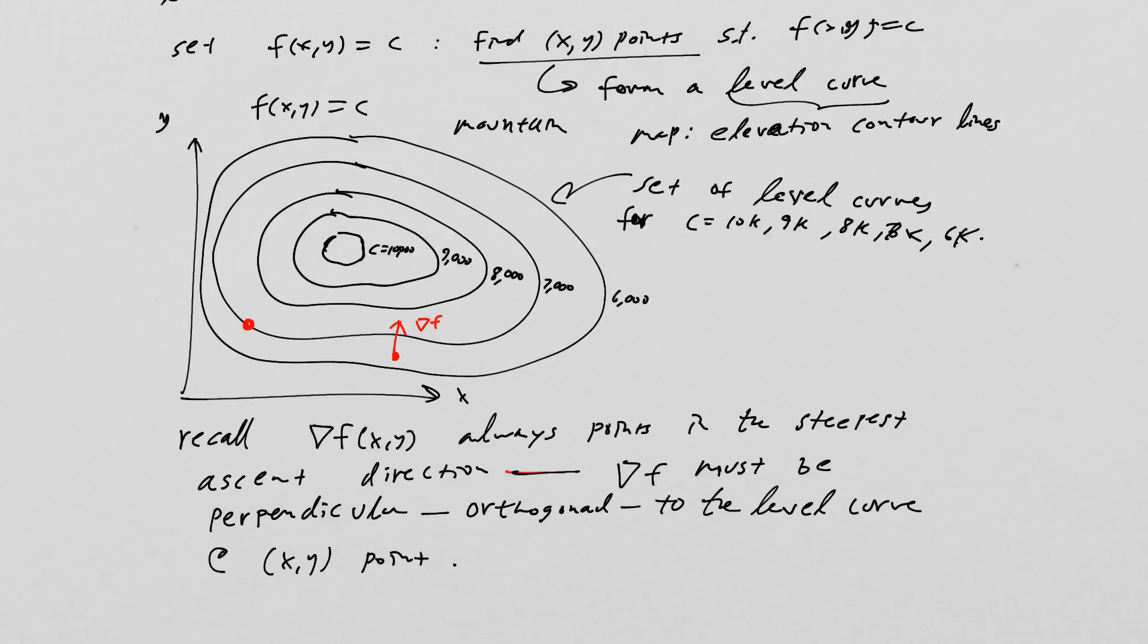So for instance, if I were here on my map of my mountain, the gradient vector would always be 90 degrees from the level curve. The level curve, we can think of that as formed by a tangent line, and it will always be orthogonal to it. Likewise, if I pick another point like that point, the gradient vector would go this way, yet the tangent vector to the contour line will always be 90 degrees in that direction.